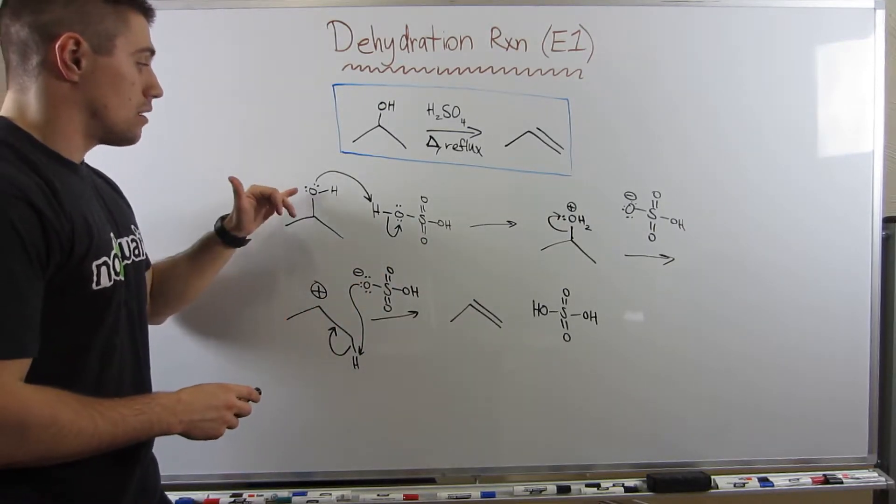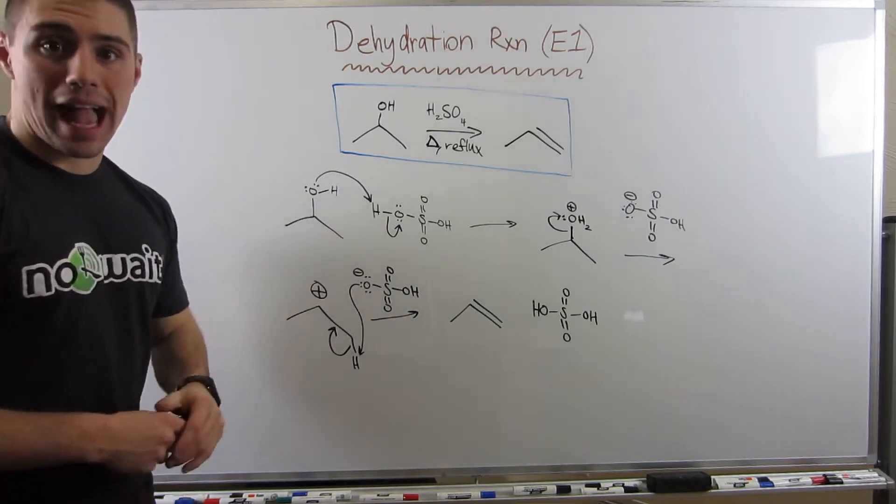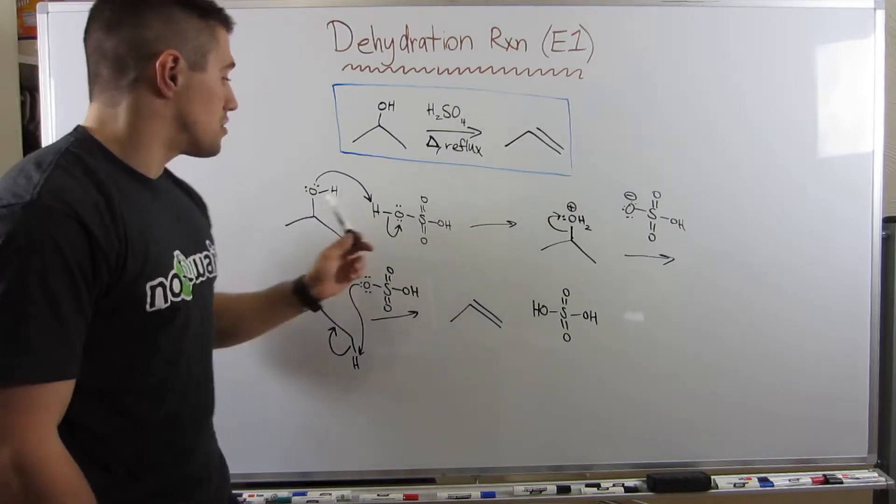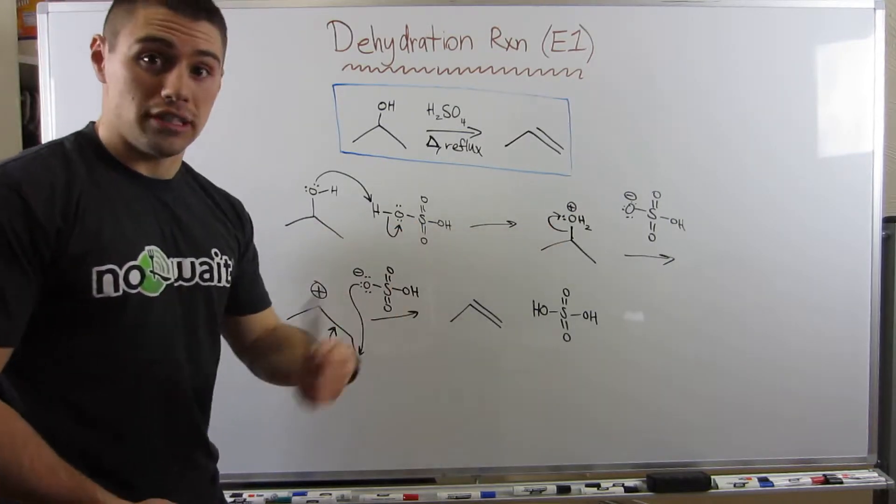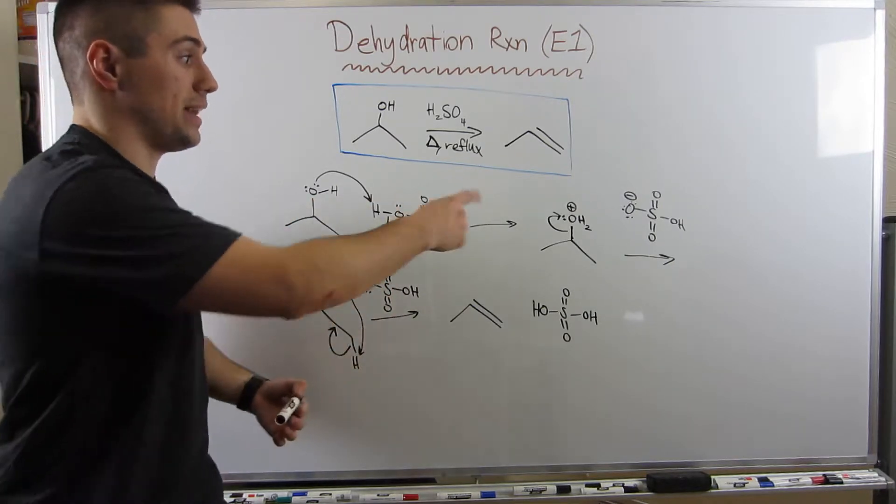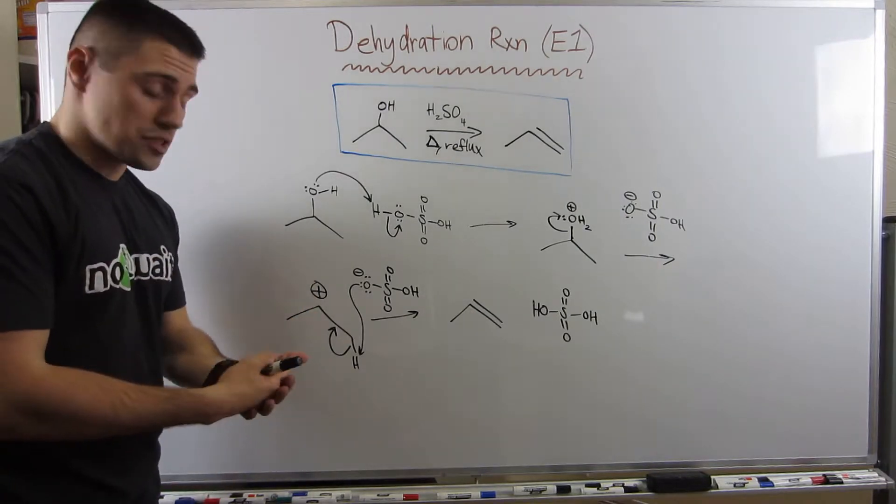This is going to grab H plus. This electron pair is going to swing over and make a double bond. We don't have to do any type of electron balancing because we're not going to break any octet rule. So now you can see we end up with our elimination product. And we started out with sulfuric acid. And since this reaction is catalyzed by acid, we start out with it and we recover it at the end.